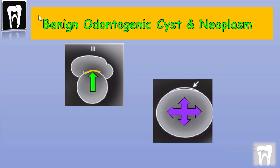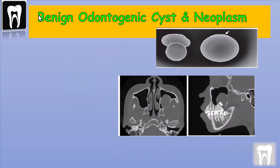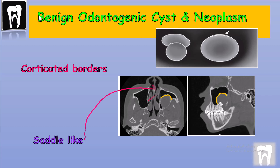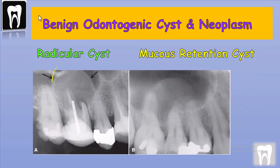The border of the cyst and sinus become the same line of bone. As the lesion continues to enlarge, it fills almost all the space of the sinus, leaving a small saddle-like sinus appearance. Benign cysts and neoplasms have a round shape with a thin radiopaque line — a cortical border.